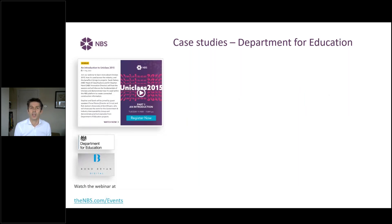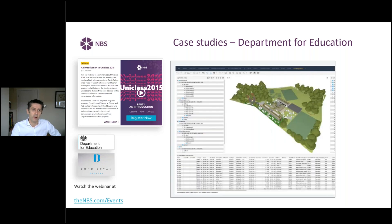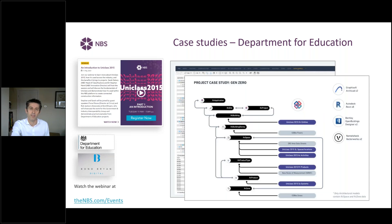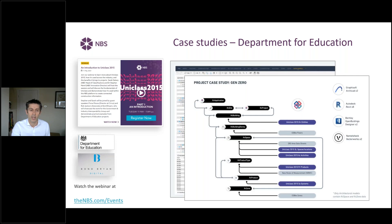If you want to see more case studies after today, you can go to the NBS website at nbs.com/events. There's a great webinar from the Department for Education working with Bond Bryan Digital, which goes through how inside an information container — in this case IFC — all of the different objects are classified for the Department for Education by the UNICLASS system. You've got an IFC file that has the objects and relationships, and those objects themselves at the building level have entity classifications, spaces have spaces and locations, activities, and then products and systems. Those relationships in IFC with the classifications can then get exported to information exchanges such as COBie as well.